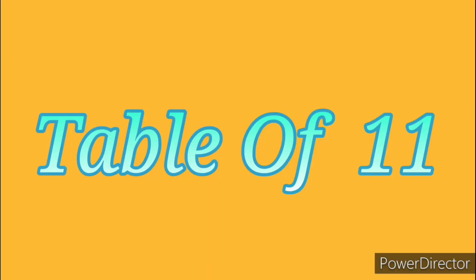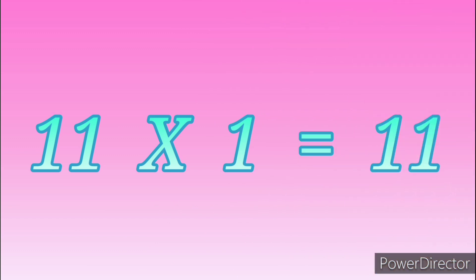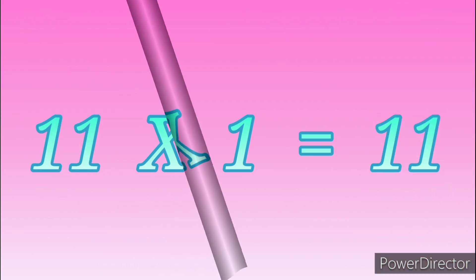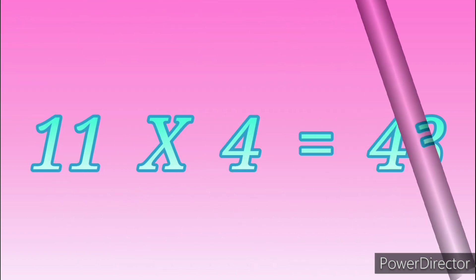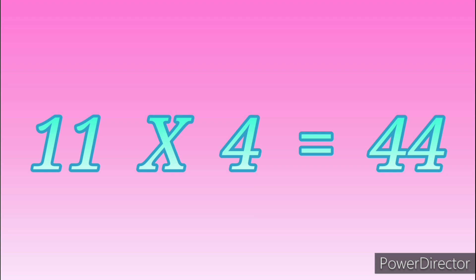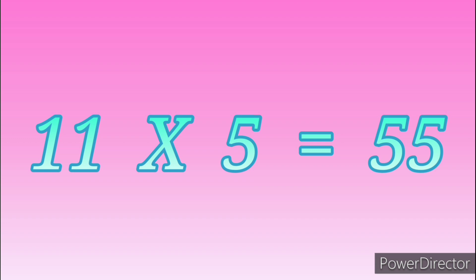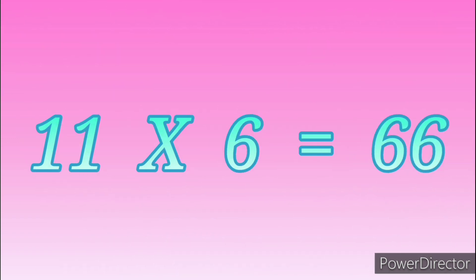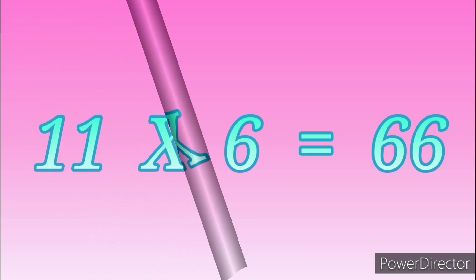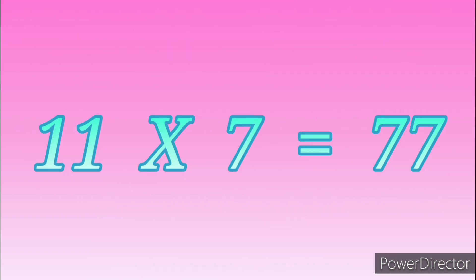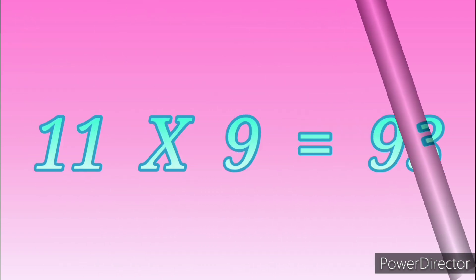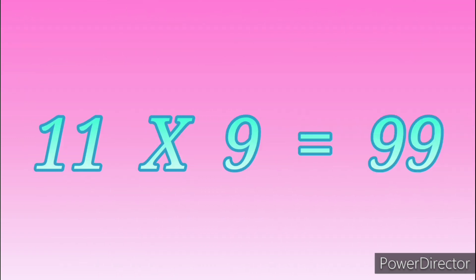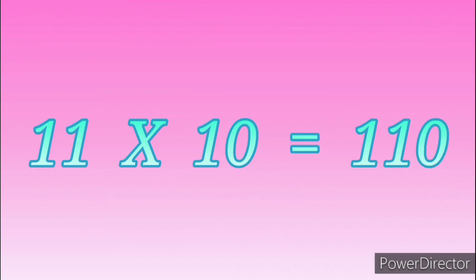Table of Eleven. 11 ones are 11. 11 twos are 22. 11 threes are 33. 11 fours are 44. 11 fives are 55. 11 sixes are 66. 11 sevens are 77. 11 eights are 88. 11 nines are 99. 11 tens are 110.